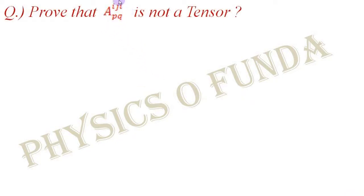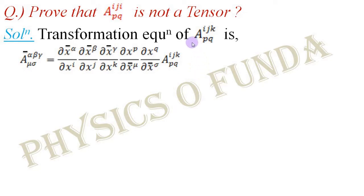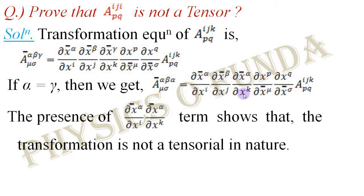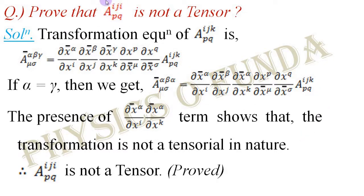Problem 2: Prove that A^ij_i^pq is not a tensor. We take the transformation equation of tensor A with contravariant indices i, j, k and covariant indices p, q. We see that i equals k in the problem, so the corresponding barred-coordinate components alpha and gamma must be set equal. Writing alpha in place of gamma in the third differential term and combining the first and third differential terms, we again cannot obtain a Kronecker delta term. Therefore the transformation equation is not tensorial in character and the given term is not a tensor.